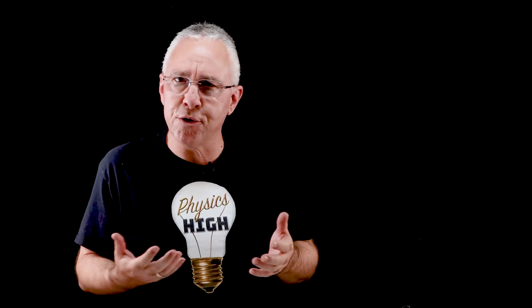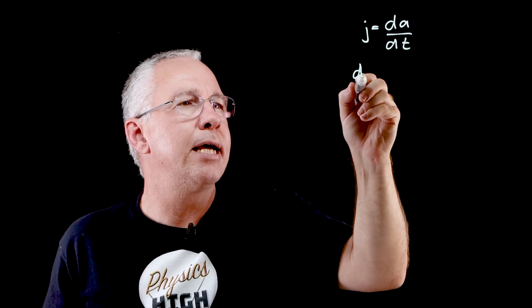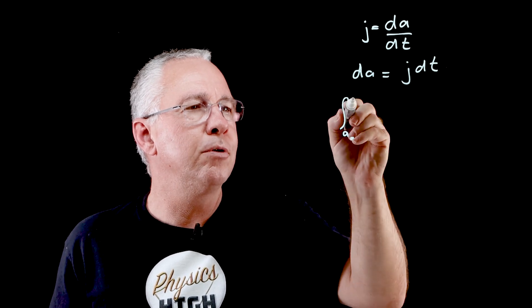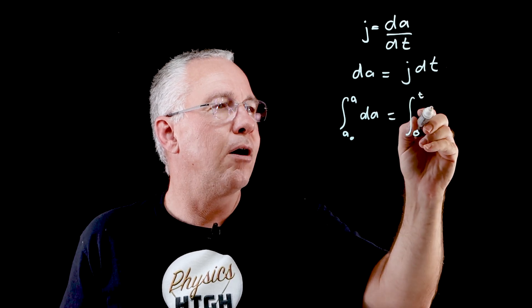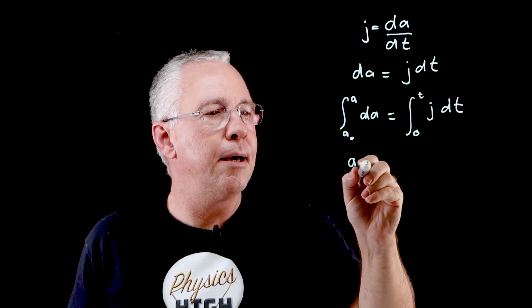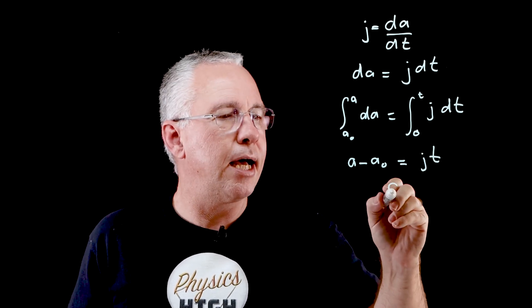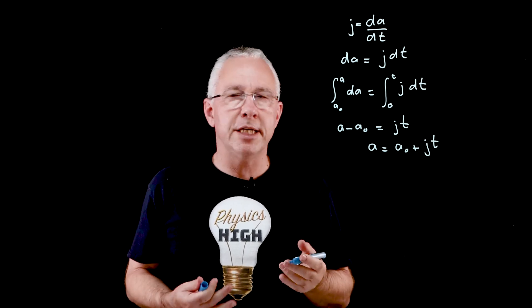So, are there now equations of motion where jerk is involved? Yes, there are. We're going to derive those three equations of motion involving jerk. We say the jerk is equal to the derivative of acceleration with respect to time. Rearranging, dA equals j dt. Integrating both sides from a₀ to a, and from t=0 to t, gives us a minus a₀ equals jt. Rearranging: a equals a₀ plus jt. And so, there's our first equation of motion.